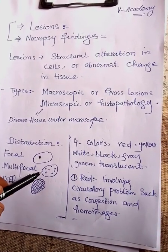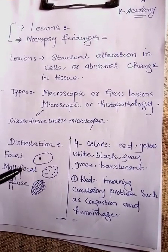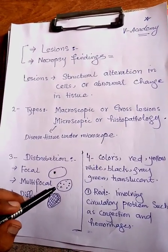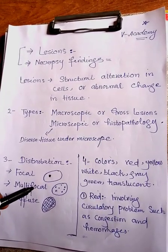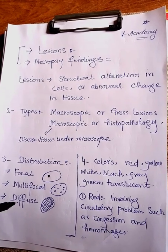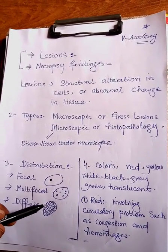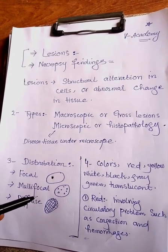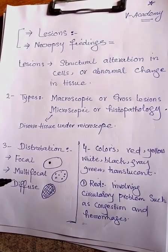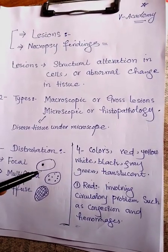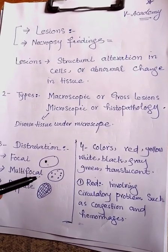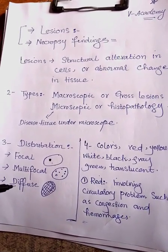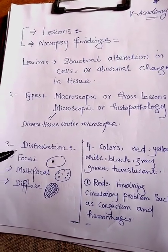Multifocal: lesions are present in different areas - multiple different locations. We call this multifocal distribution. Diffuse: the whole organ is affected; no area is left unaffected. This is called diffuse distribution. So - focal means a particular single area, multifocal means different areas at different spots, and diffuse means the whole organ is affected.